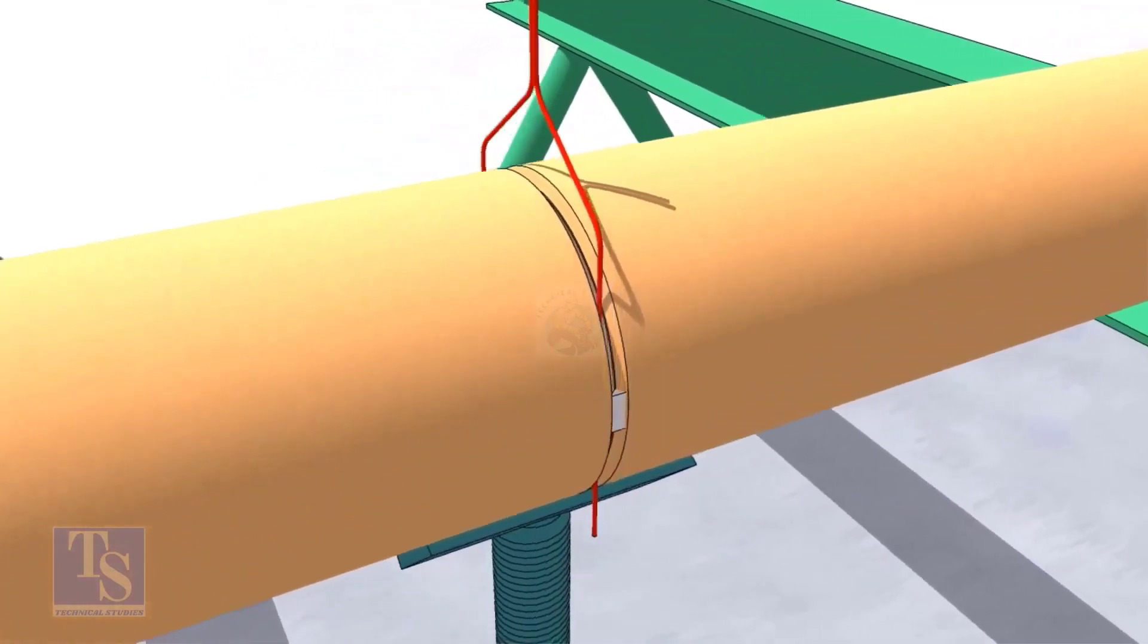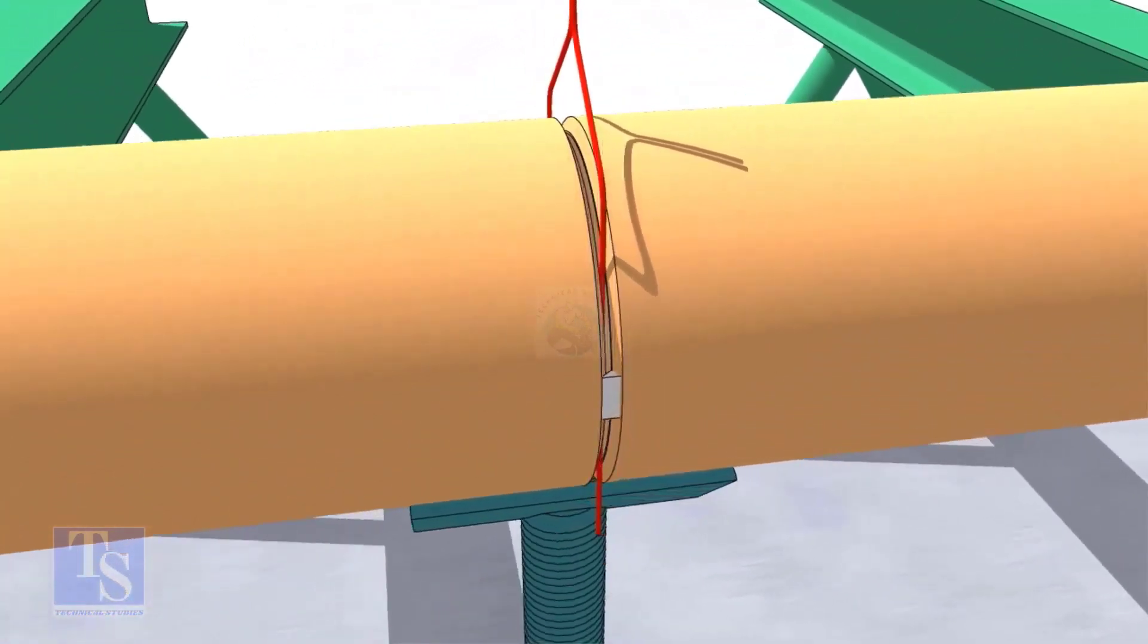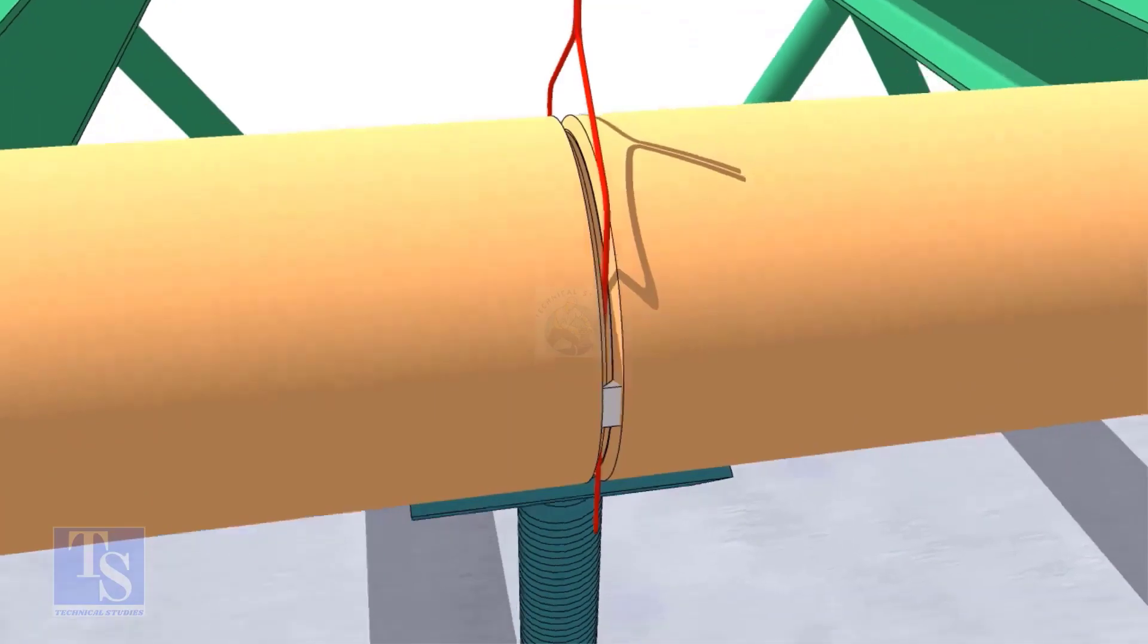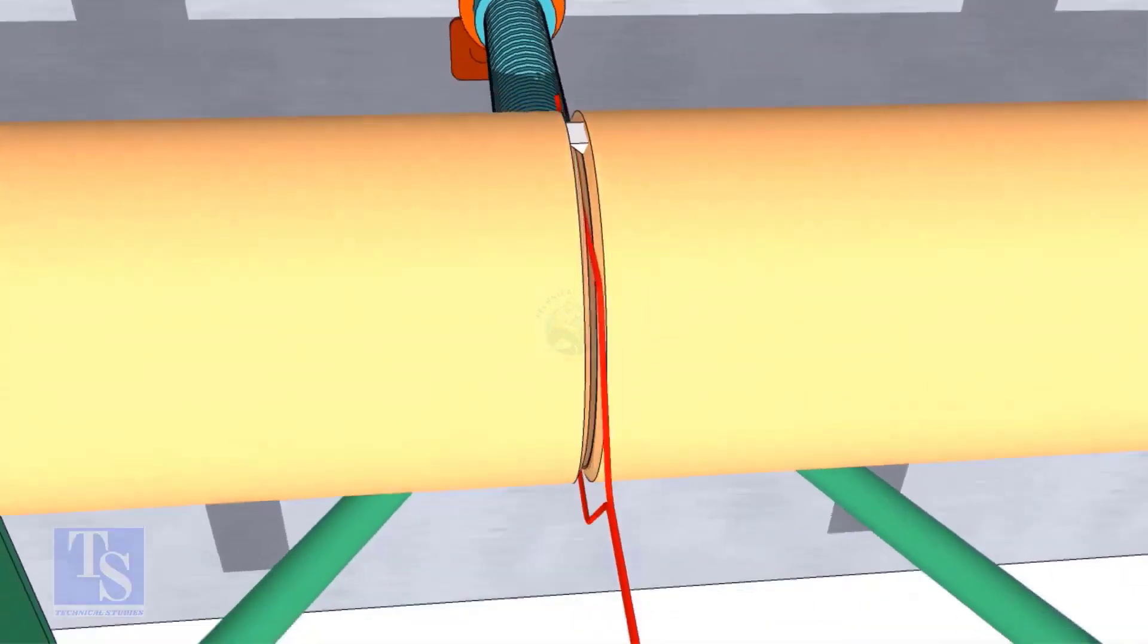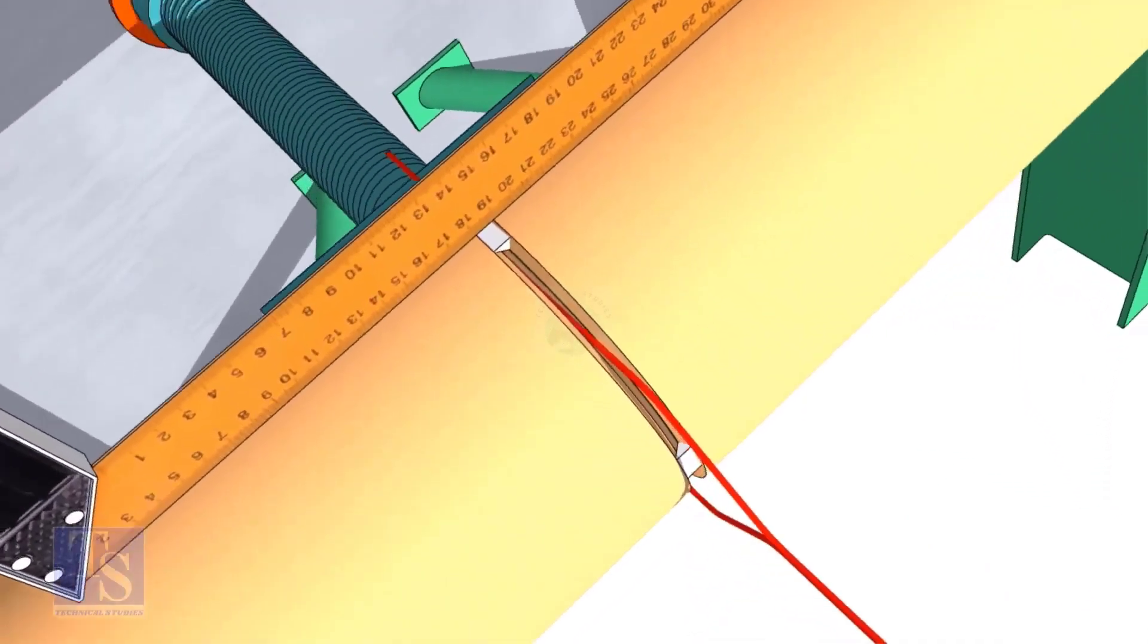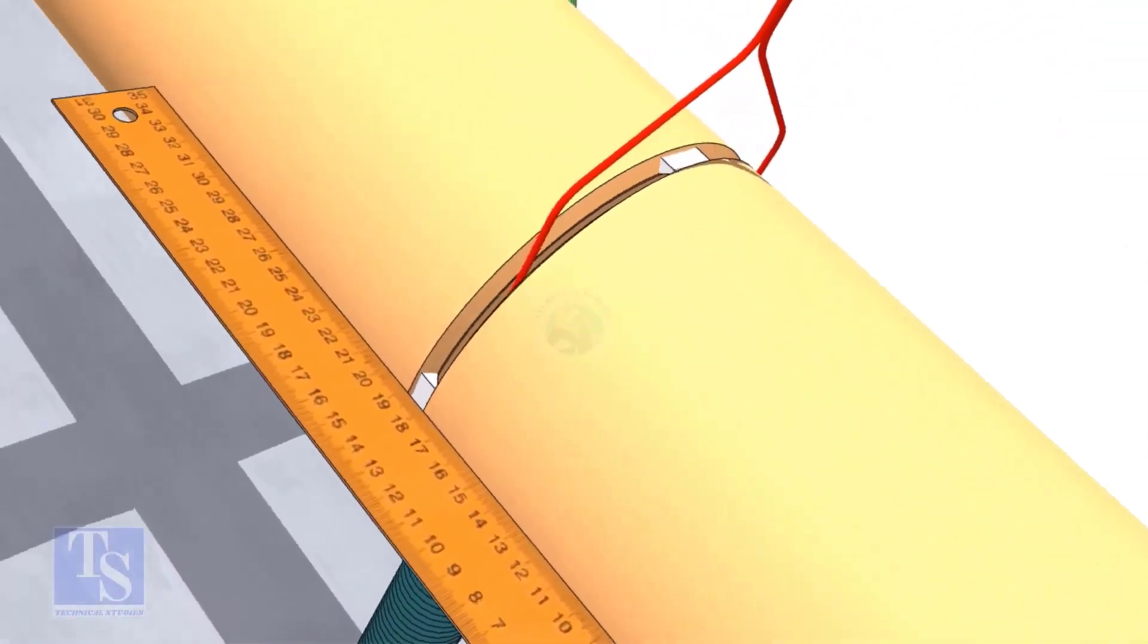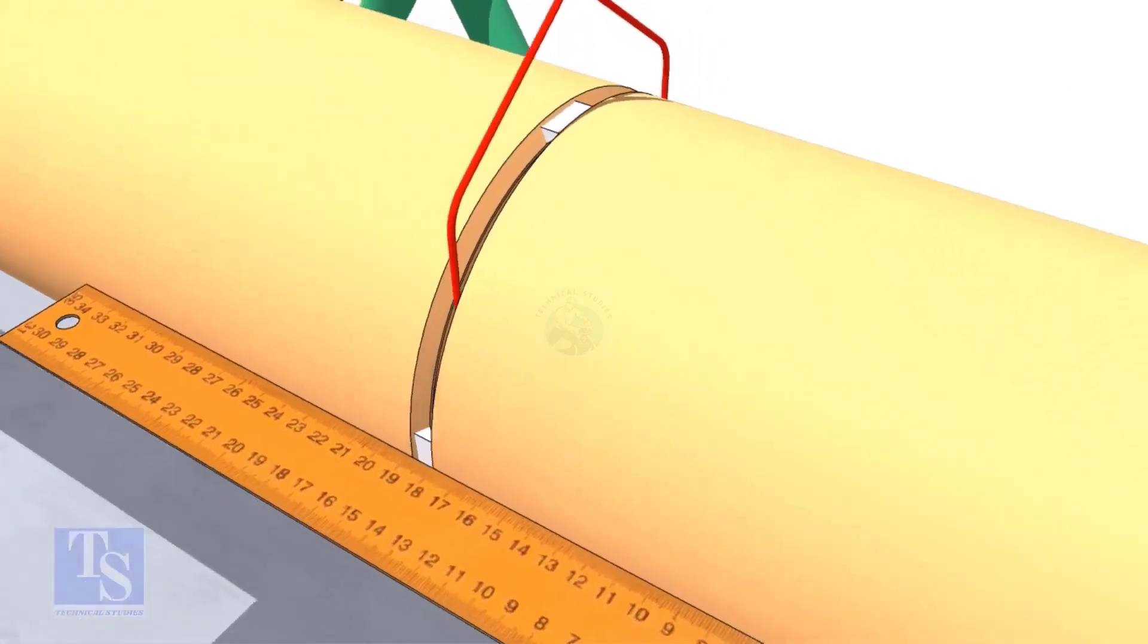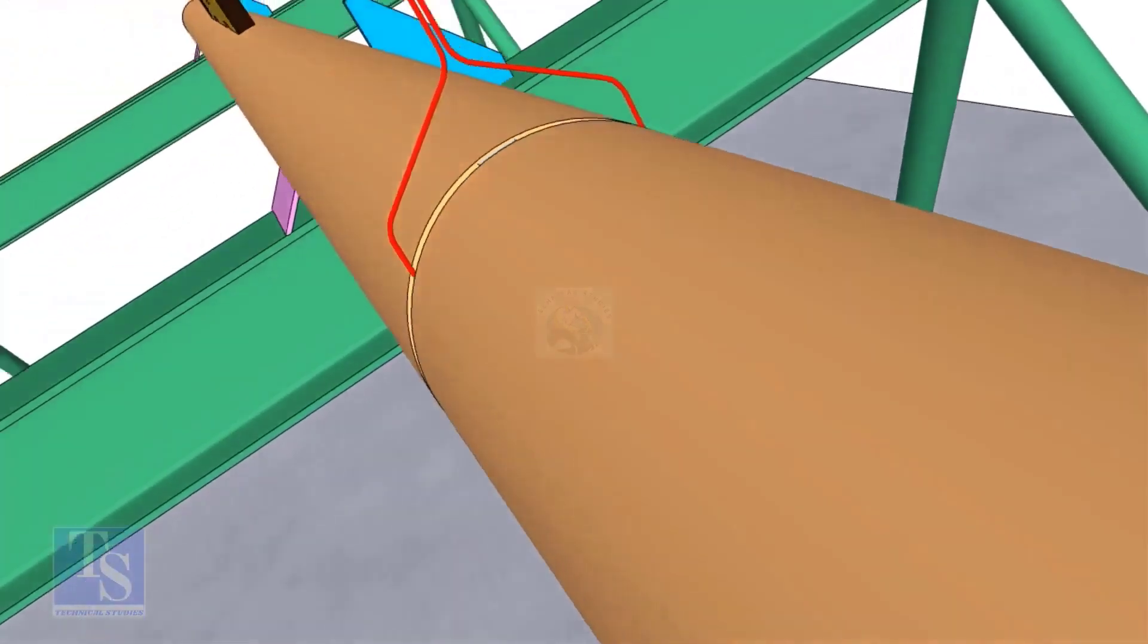Tack weld on both sides of the pipe, then the top and bottom of the joint. Don't forget to cross-check the overlap.